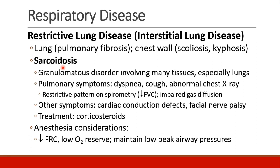Patients who have sarcoidosis have pulmonary symptoms like dyspnea, cough, and abnormal chest x-ray, and on their spirometry, you'll see a restrictive pattern, which means their FVC will be decreased, their gas diffusion may be impaired, but their peak flows and their FEV1 to FVC ratio should be relatively normal. Other symptoms you may see in patients with sarcoidosis include cardiac conduction defects, facial nerve palsies, and often these patients are treated with corticosteroids. When doing anesthesia for patients with sarcoidosis, we should consider that they have a low FRC and therefore a low oxygen reserve, and therefore they may desaturate quickly after induction of anesthesia. We should also maintain low peak airway pressures because they have a restrictive lung disease and low lung volumes.